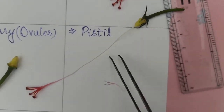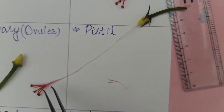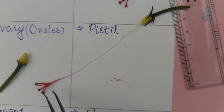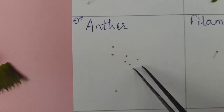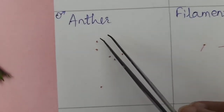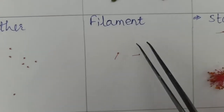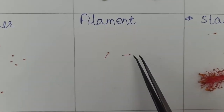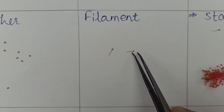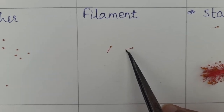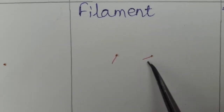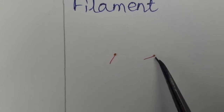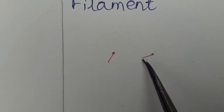Here is the ovary, here is the style, and this is the stigma on top. The next part is the anther. These tiny particles are the anther. Here is the filament — the top head is the anther and this short tube-like structure is the filament. Here you can see this is the anther and this long one is the filament.